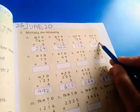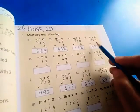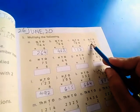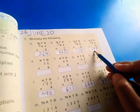53 into 9. 9 threes are 27. 9 fives are 45. 45 plus 2 is 47.